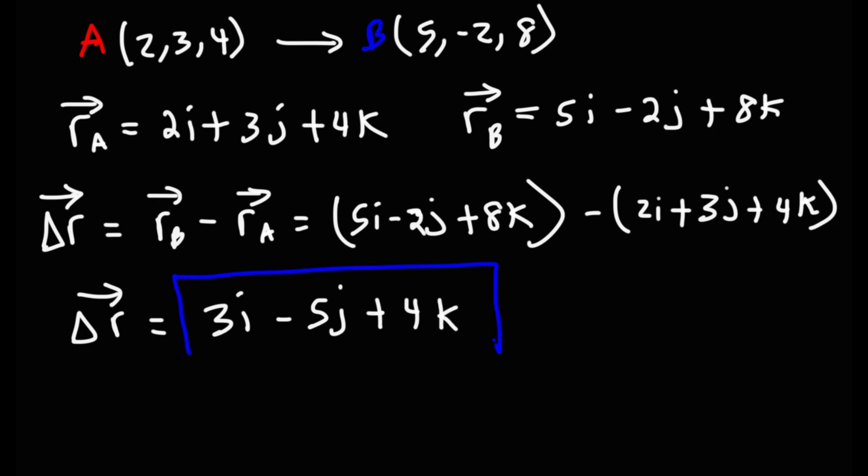So that's how you can find the displacement vector using two position vectors. It's simply the difference between the two, as you go from A to B in this case.